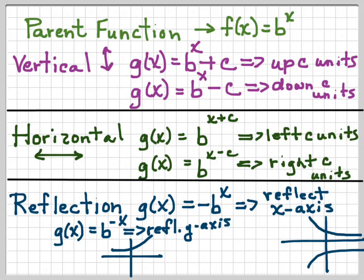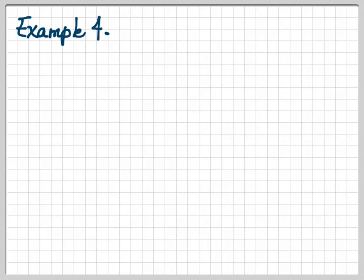2 to the x and 2 to the minus x. So if we start off with that, and we reflect it over the y axis, we're going to have that, and it's going to intersect there at 0, 1.